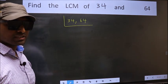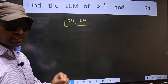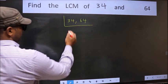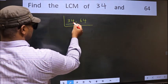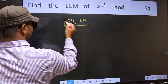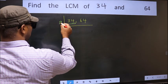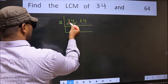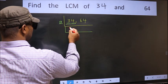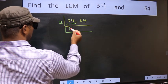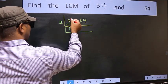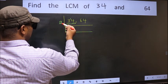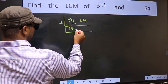Now focus on the first number, which is 34. For this number, last digit is 4 — even, so take 2. First digit is 3; a number close to 3 in the 2 table is 2. So 3 minus 2 is 1, carried forward: 14. When do we get 14 in the 2 table? 2 times 7 is 14.